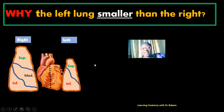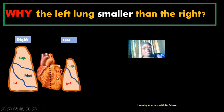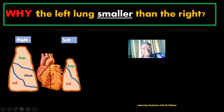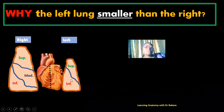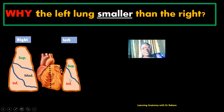Also, if you look at the placement of the heart, you can see that the heart is directed more to the left. Within the thoracic cavity, it is taking up more space on the left side, and in doing so, it pushes the left lung, thereby reducing the space that the left lung occupies. This also justifies the reason why the left lung is smaller than the right lung — the space available for the left lung is reduced.